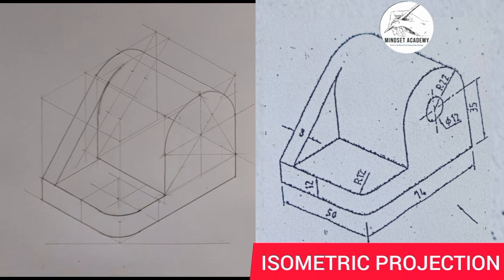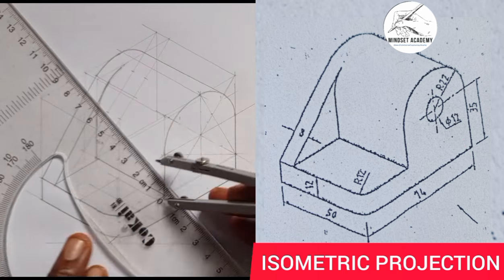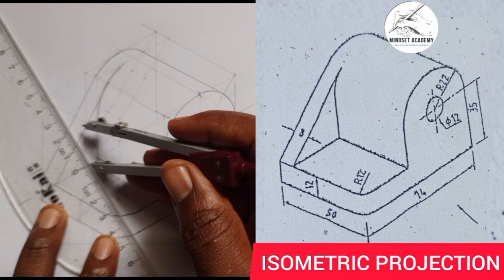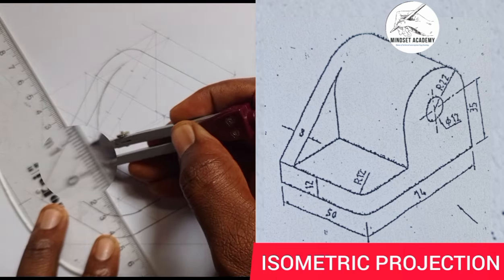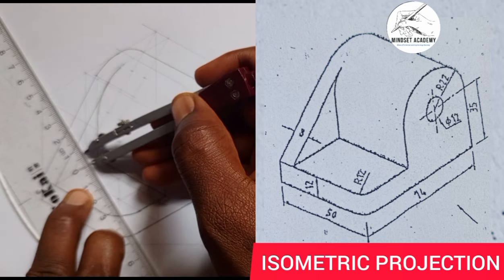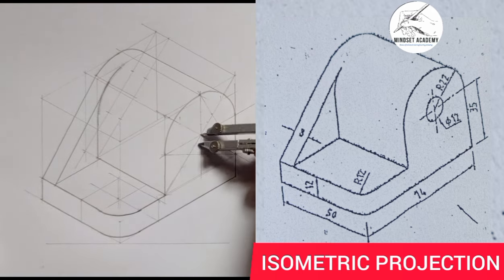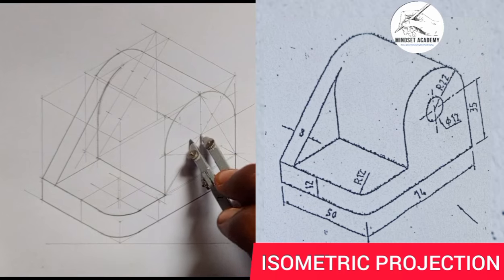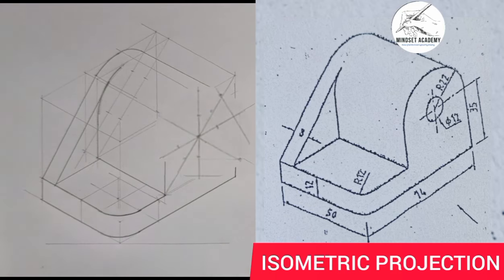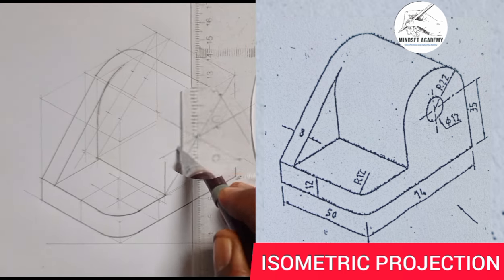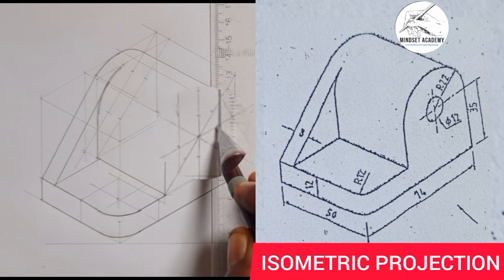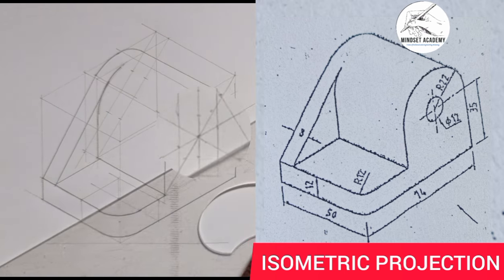If you look at this circle here, it has a diameter of 12, meaning the radius is 6. So you are going to measure 6 on your meter rule from 0 and place here — from 0 to 6. Place it here, then mark up, mark down, go to the right, come to the left. Take a vertical line passing through this point you marked.